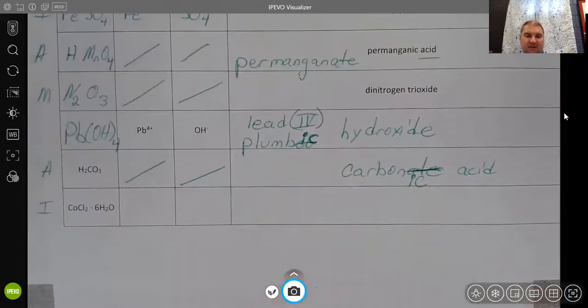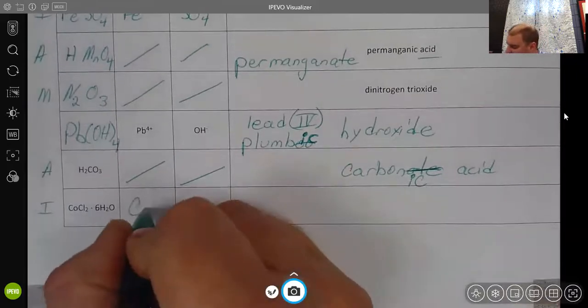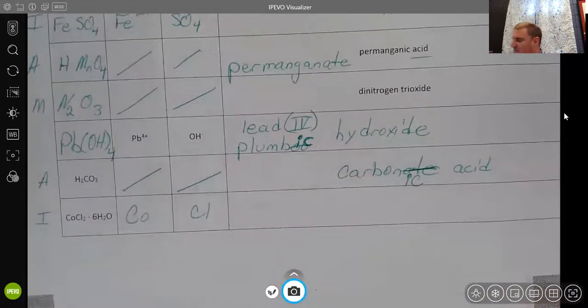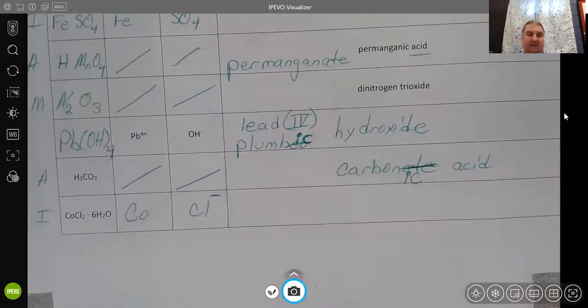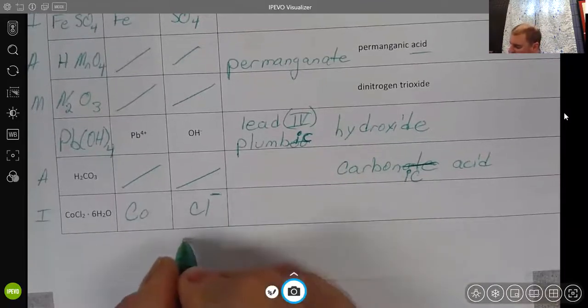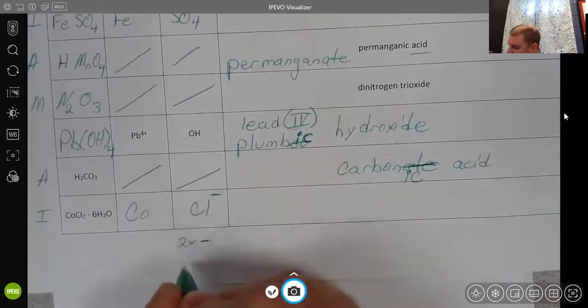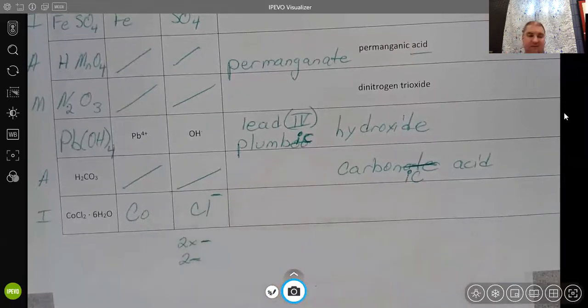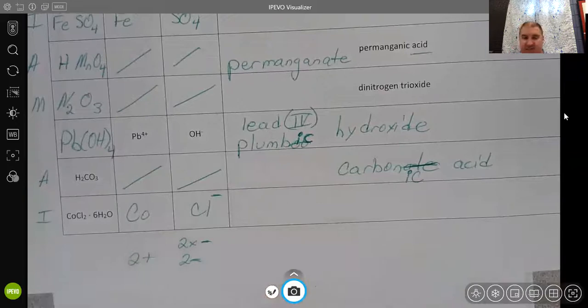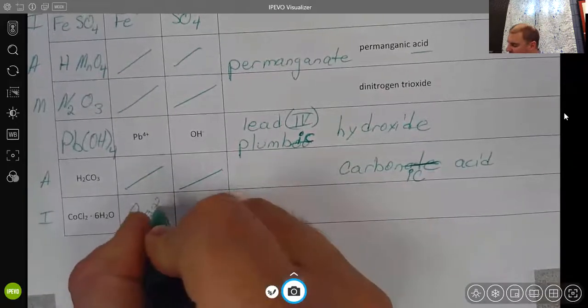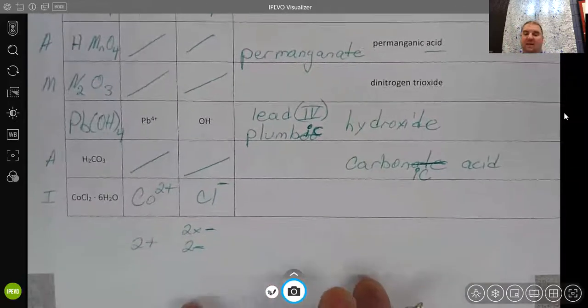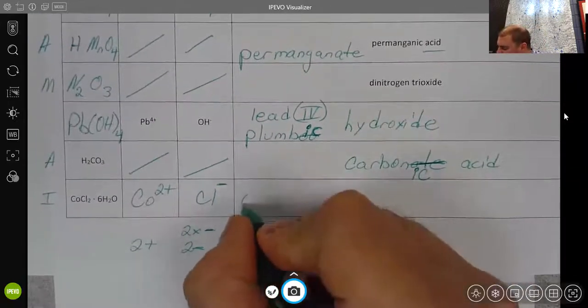Finally, the COCl2, we're going to have CO, we're going to have Cl, chloride is 1 minus, and there are two of those. So our total negative charge is 2 minus. To balance that out, our cobalt has to be 2 plus. There's only one cobalt, so this one single cobalt is 2 plus. This tells us that this would be cobalt 2 chloride.